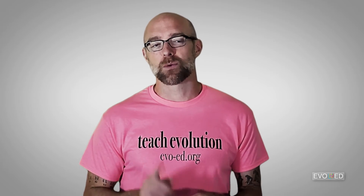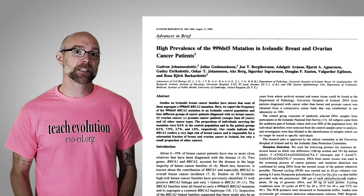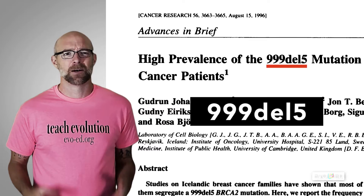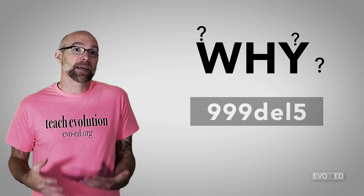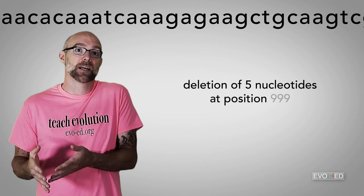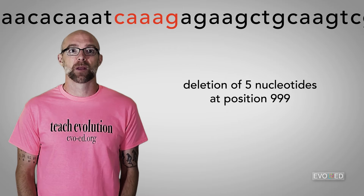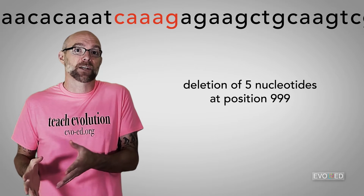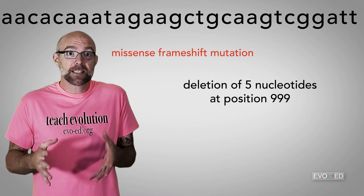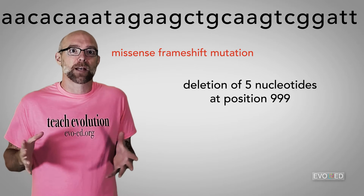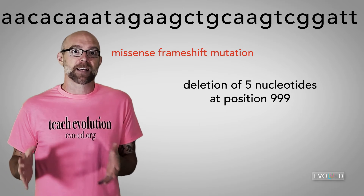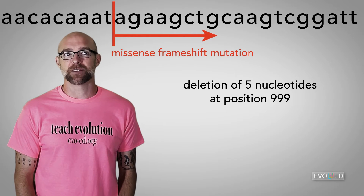Let's take a look at just one of those. This particular mutation is called 999-del5. This mutation consists of a deletion of five nucleotides at position 999 of the gene. When five nucleotides are deleted, it leads to a missense frameshift mutation, and this would have a huge impact on whatever amino acids are ultimately coded for — for all of the codons that occur after the mutation on that stretch of DNA.